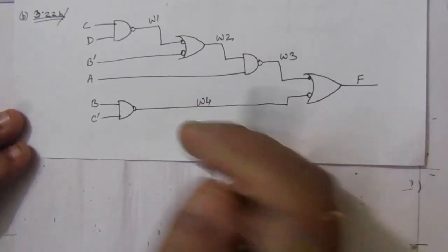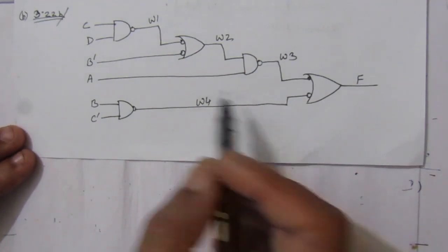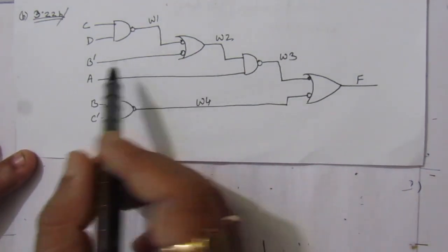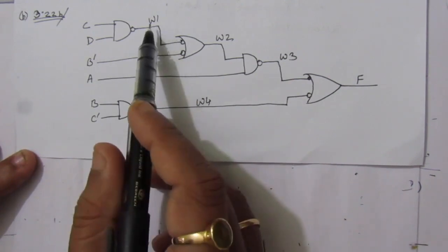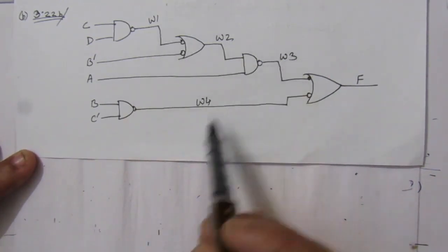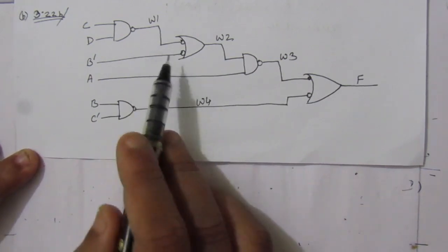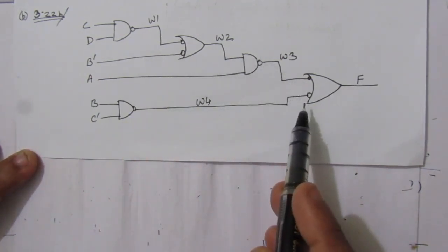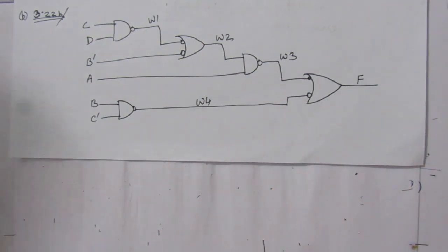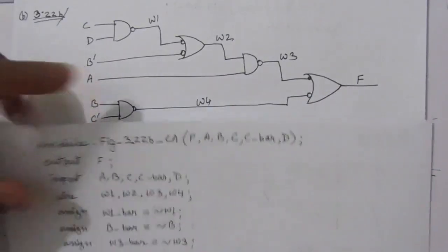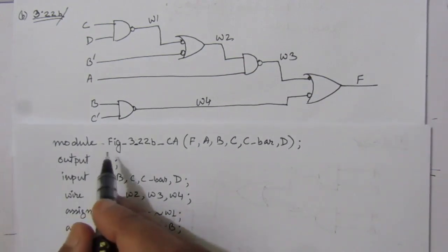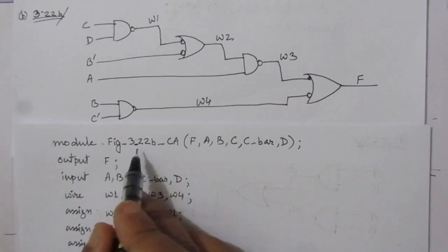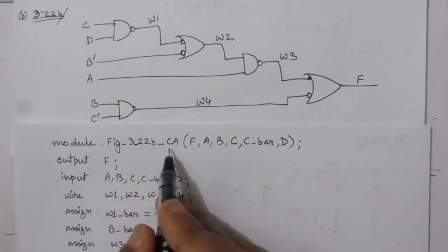In the second part of the problem we are given with this logic circuit. We assign the wires W1, W2, W3, and W4. Here we have inverted inputs, so we need to handle complements. We write the module similarly, using CA for continuous assignment, with F as output and the corresponding inputs defined.